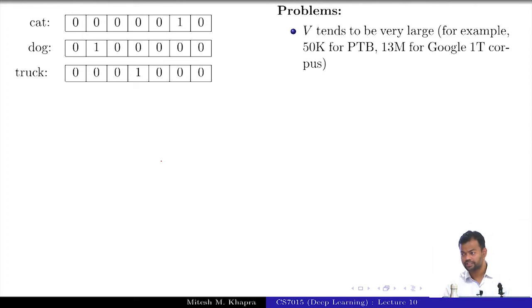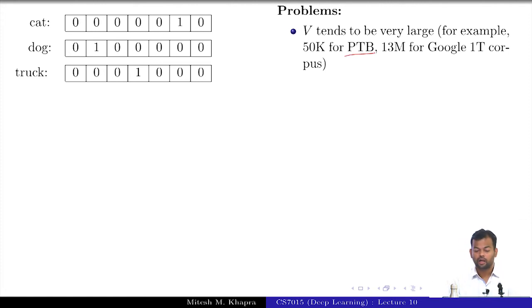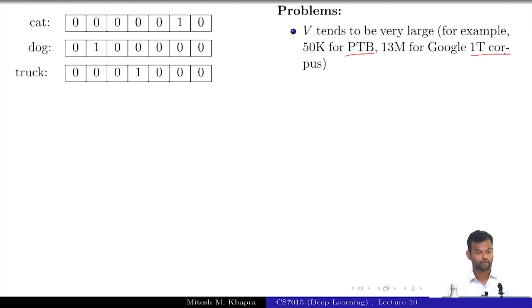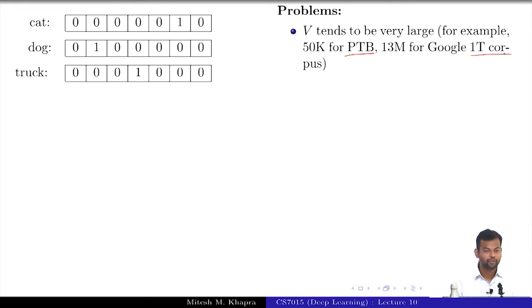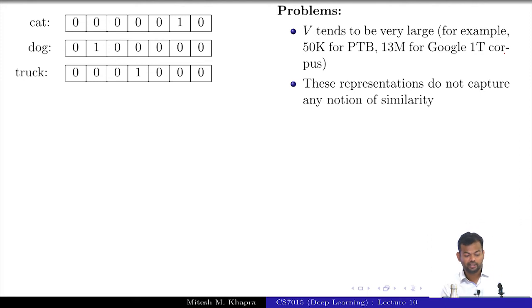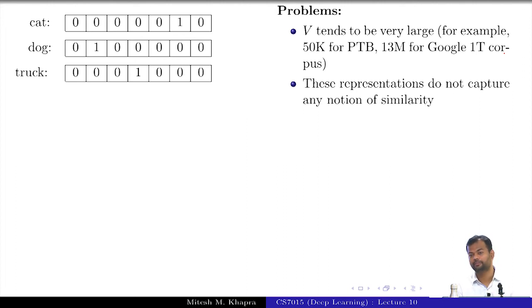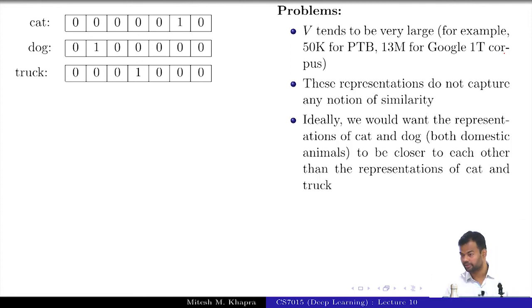The drawback is that V tends to be very large. The Penn Treebank corpus, used in many NLP applications, has a vocabulary of 50K. Google's 1T corpus has 13 million words — essentially most crawled web pages. Representing every word as a vector of size 13 million clearly does not work; the storage is too much and the vectors are almost entirely zeros except for one bit. The other important problem is that these representations capture no notion of similarity. Among cat, dog, and truck, which two should have similar representations? Cat and dog — both are domestic animals, mammals — so the similarity between cat and dog should be greater than between cat and truck.